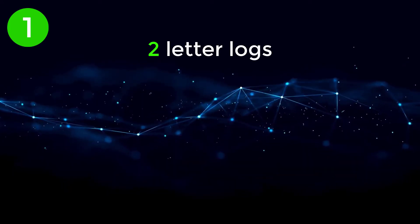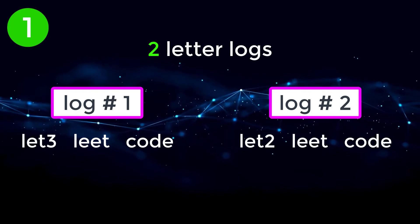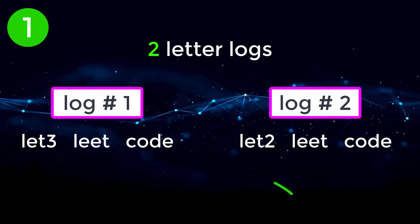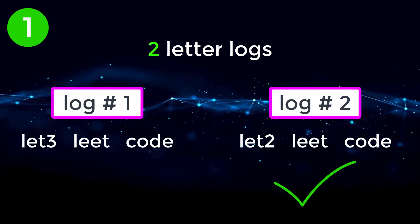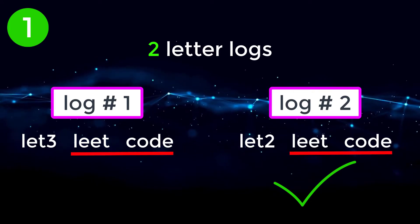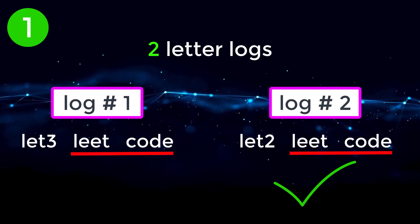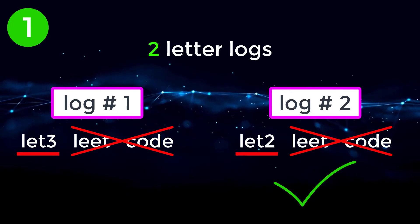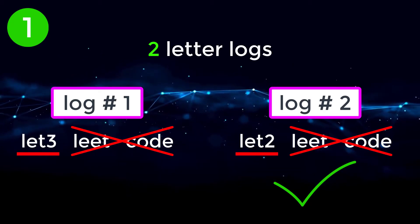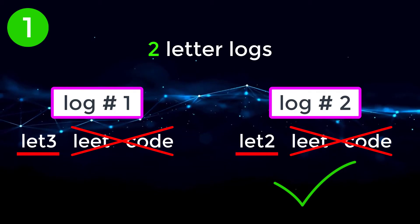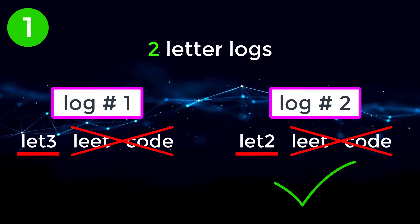However, if we look at another example, log one and log two, in this example, log two would come before log one because both logs have the same letters, leet and code. So what that means is we have to compare the unique identifiers lexicographically. Let two is less than let three. So log two would come before log one.